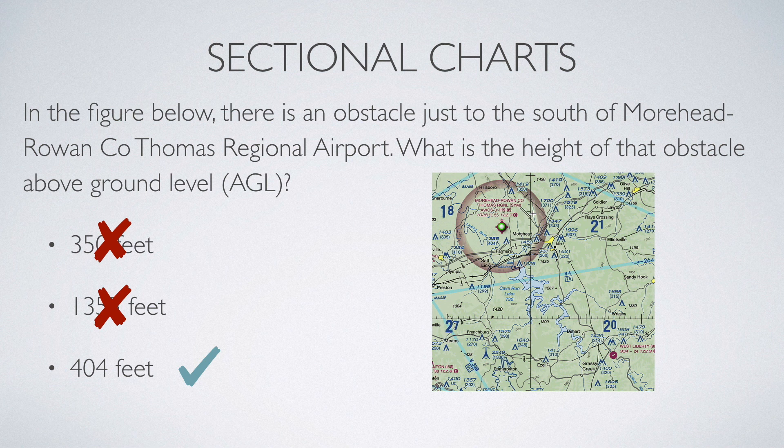If you look further to the west, there's a group of obstacles that almost looks like an M with two dots underneath it, and it says 1,334 and then in parentheses 410. The 1,334 is mean sea level, and the 410 in parentheses is above ground level. You're not always going to have the number in parentheses underneath, but for a lot of them you will, and when you do it indicates above ground level.